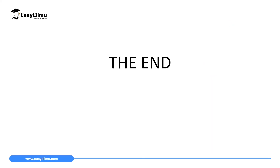That marks the end of our lesson today. In the next lesson we will discuss proofs that light travels in a straight line, and we are going to see how you can arrange three cardboards to prove this. Then we will talk about shadows, the eclipse — how we can use the eclipse we discussed in geography to prove that light travels in a straight line — and later we will look at the pinhole camera and how it proves that light travels in a straight line.